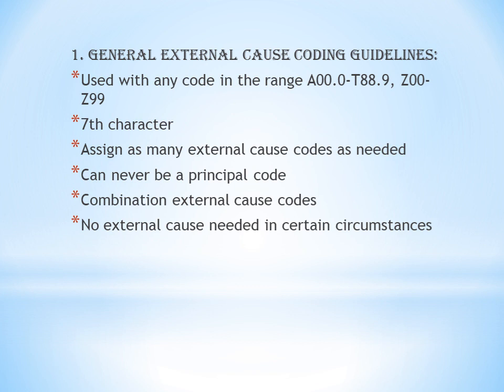Cause codes will contain a seventh character. If you forget what the seventh character is, refer to the fracture chapter where it is discussed in detail. The common seventh characters are: A for initial encounter, D for subsequent encounter, and S for sequela. The same seventh character applies to cause codes as well. Also, assign as many external cause codes as needed — if more than one is required, you can code all of them.